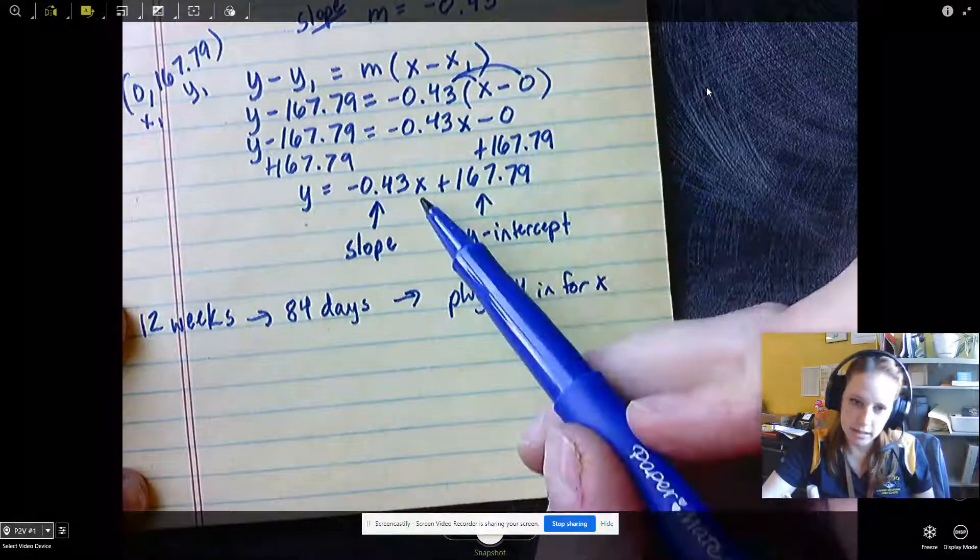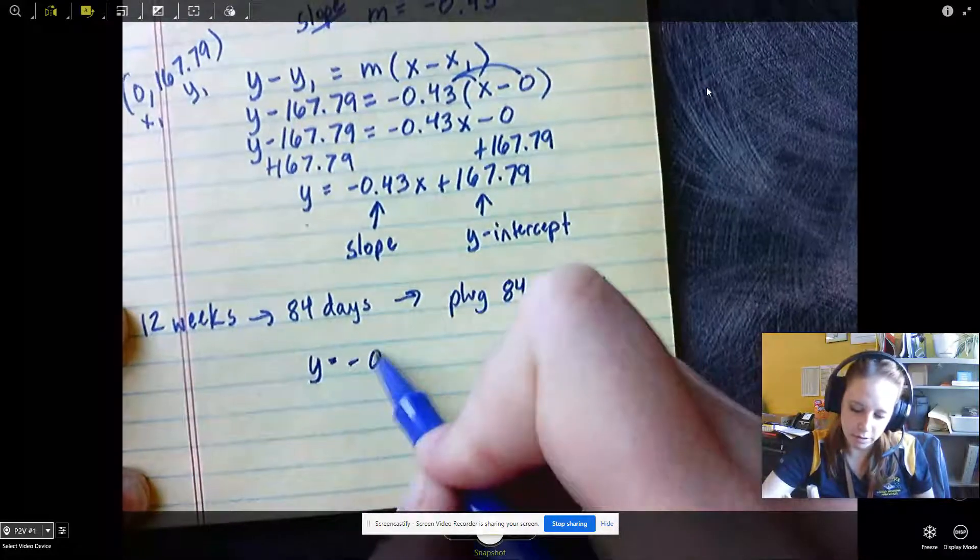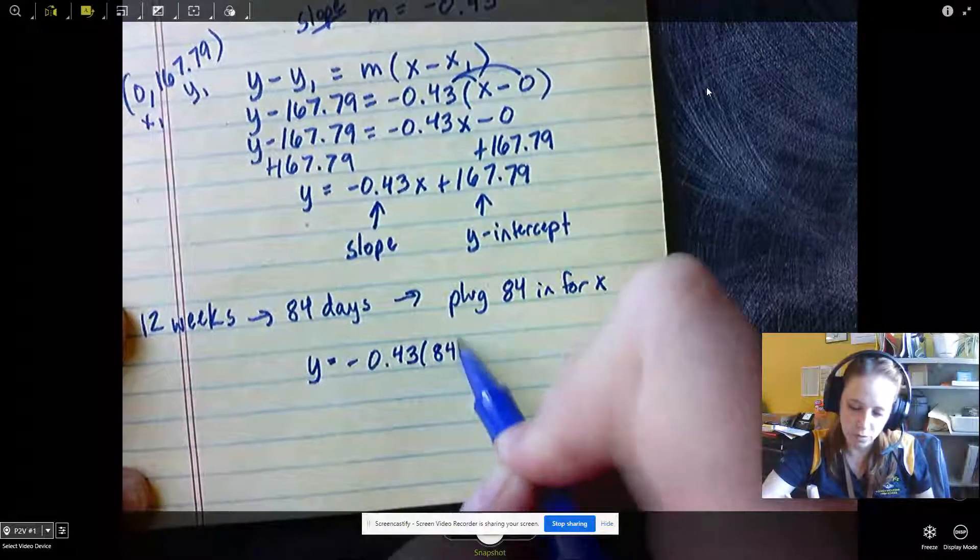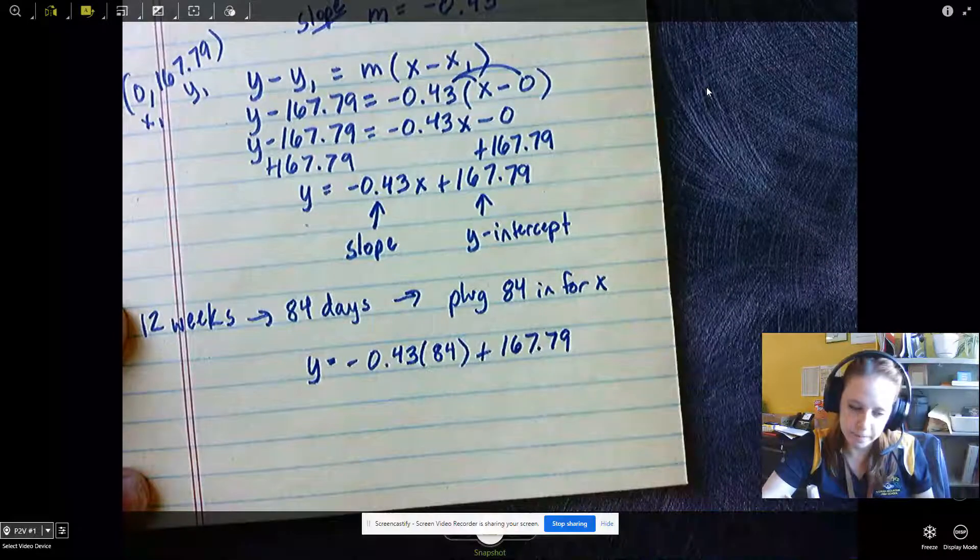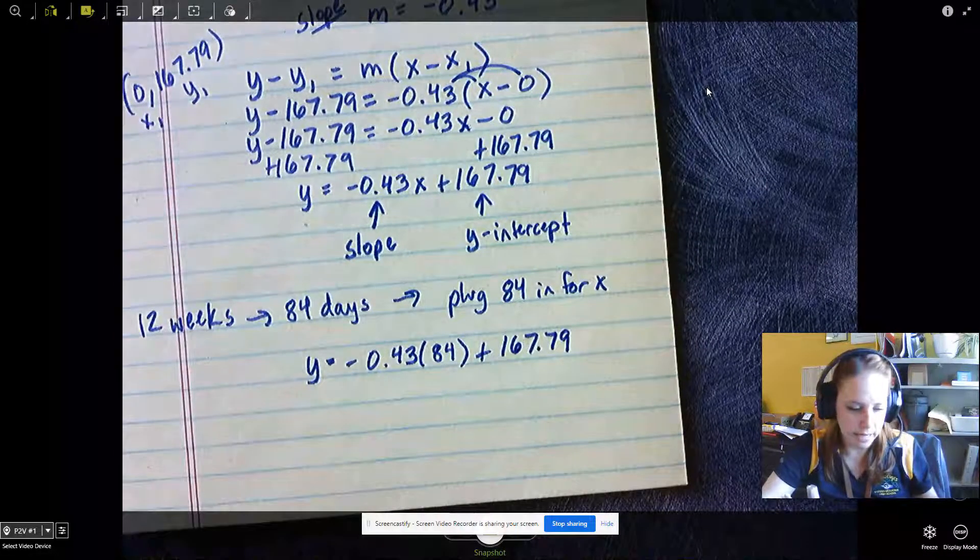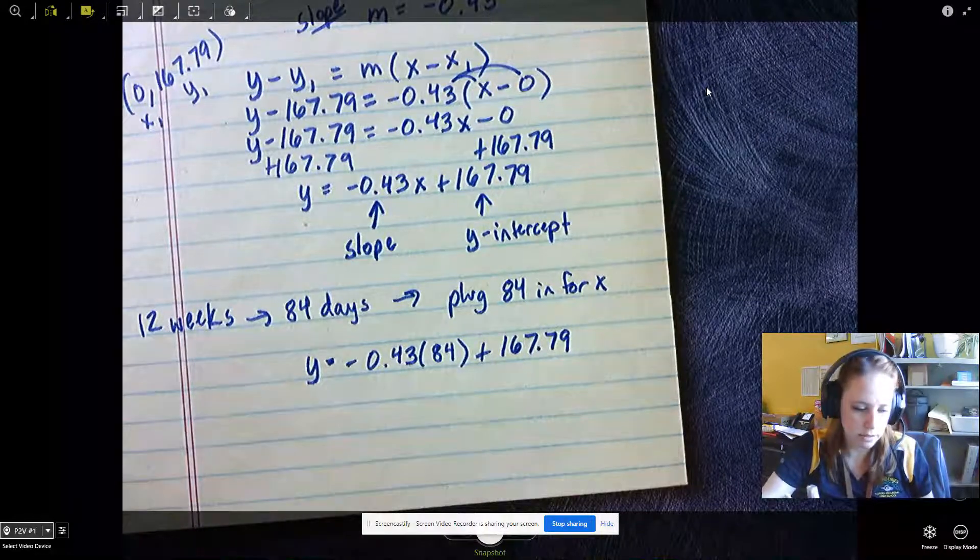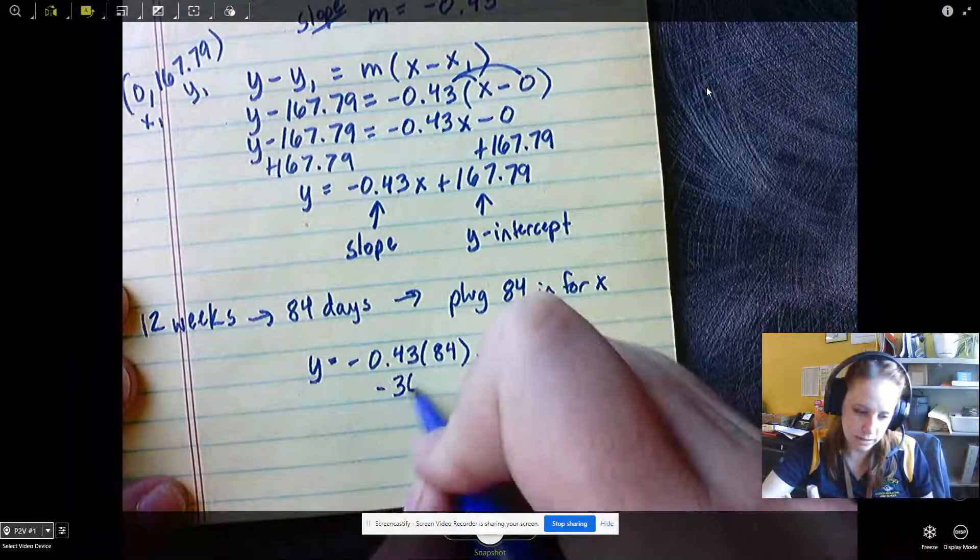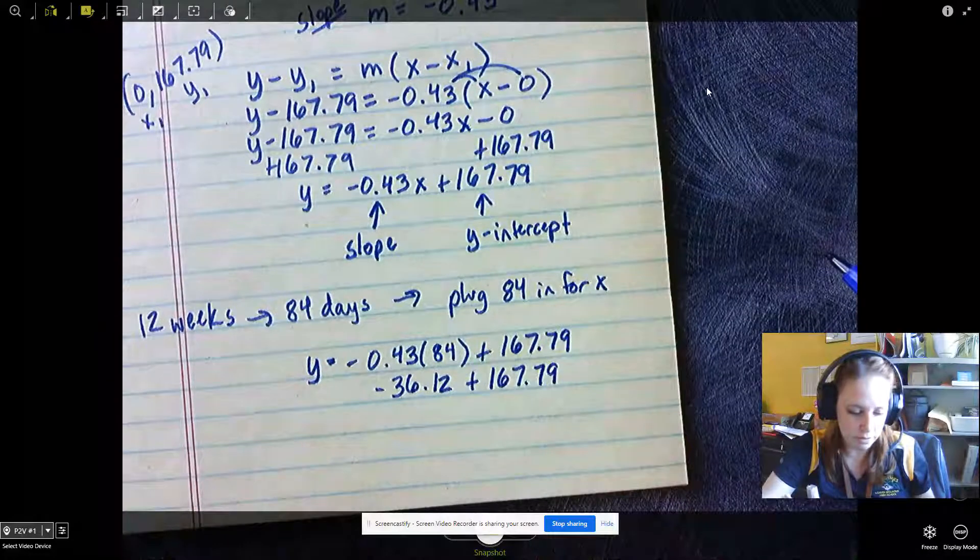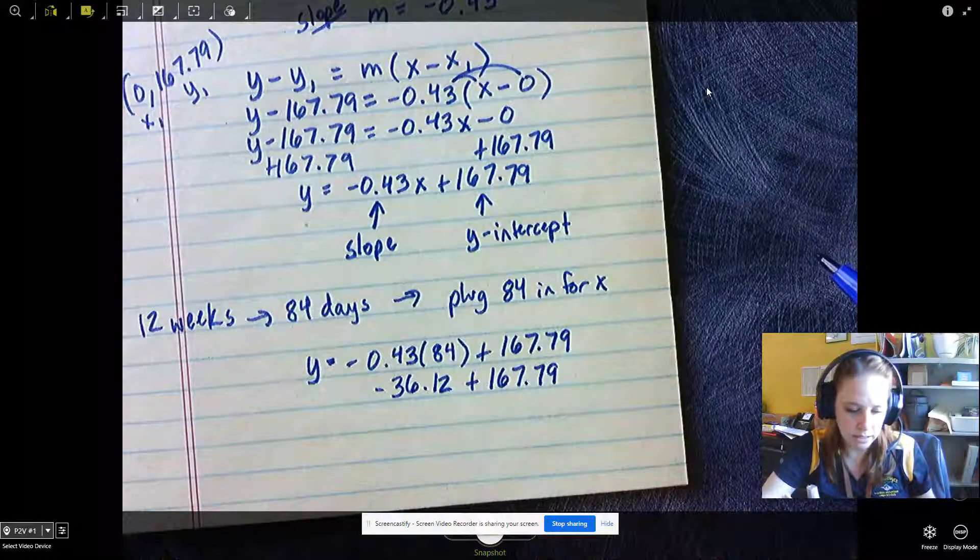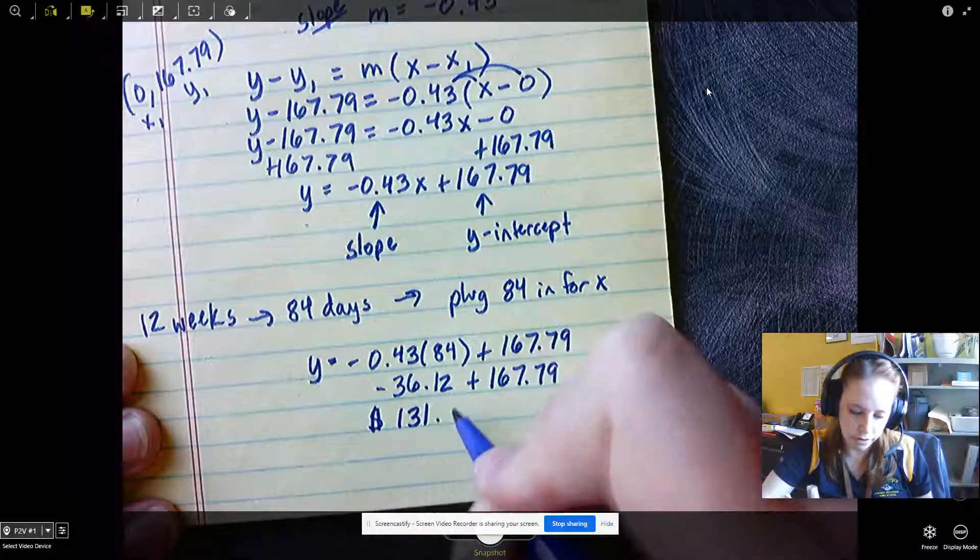In this spot for x, we're going to put 84. So y equals negative 0.43 times 84 plus 167.79. When we calculate that, negative 0.43 times 84 is negative 36.12 plus 167.79.